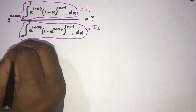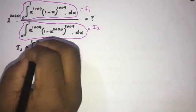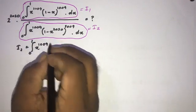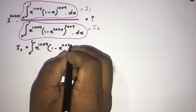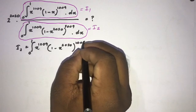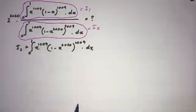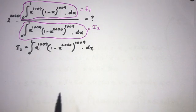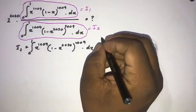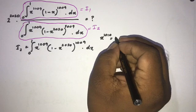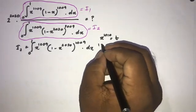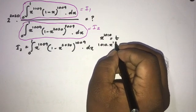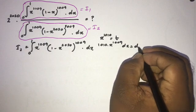I2 is equal to the integral from 0 to 1 of x to the 1009 times (1 minus x) to the 2020 times 1009 power dx. Now I am going to use the substitution method. If we take x to the 1010 equal to t, then differentiating gives 1010 times x to the 1009 dx equal to dt.